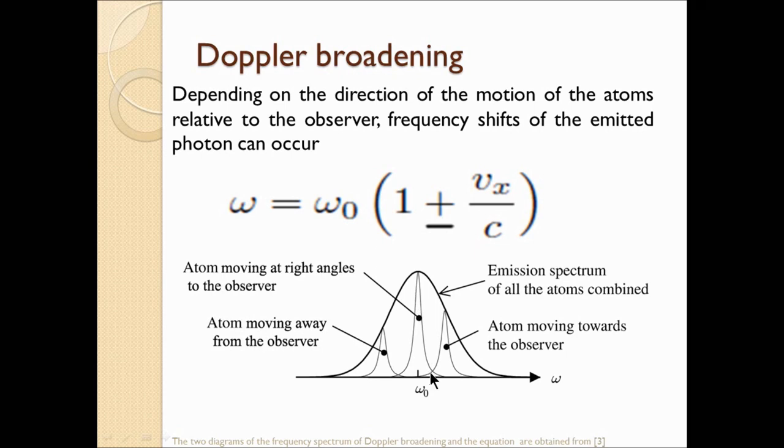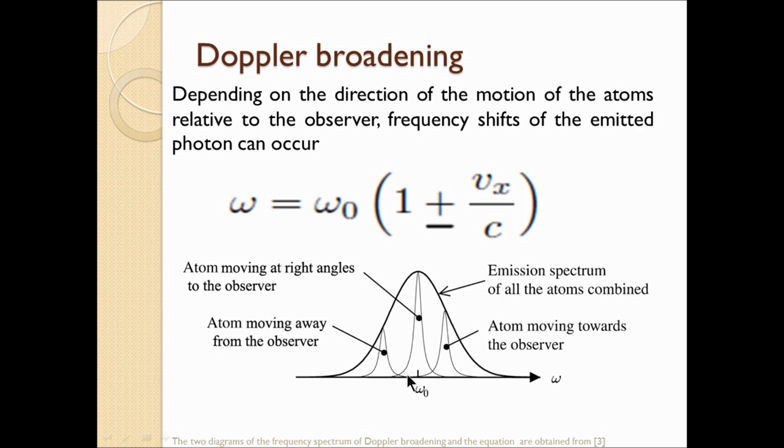Imagine, as the atoms move towards you, then you get positive velocity, which gives rise to that peak. But when the atoms are moving away from you, then you get negative velocity and so this peak is seen. So the overall shape corresponds to that image.